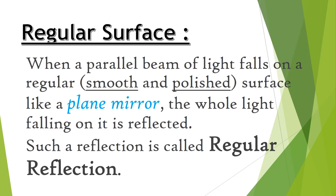We come across two terms: regular surface and irregular surface. Let us try to understand each of them. Regular surface: when a parallel beam of light falls on a regular, smooth and polished surface like a plain mirror, the whole light falling on it is reflected. Such a reflection is called regular reflection.